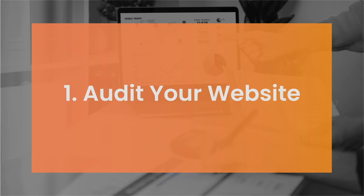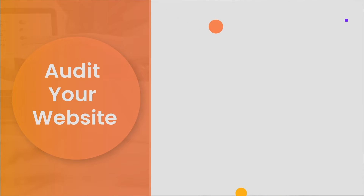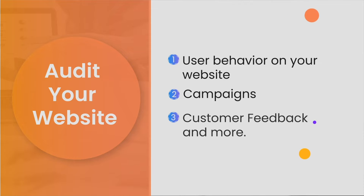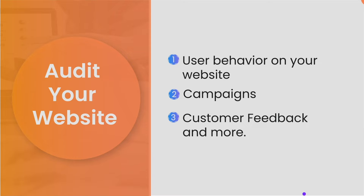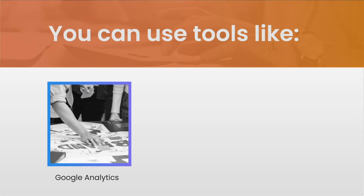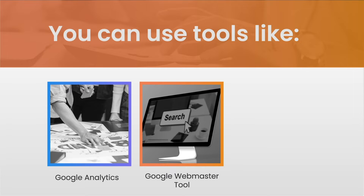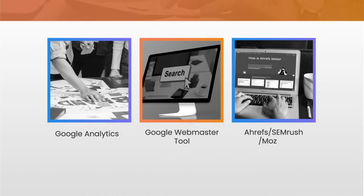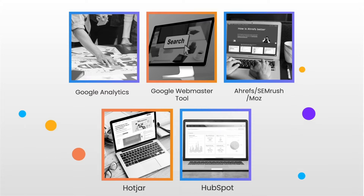Step 1: Audit your website. To begin, you need to audit your website. Here you can analyze user behavior on your website, campaigns, customer feedback, and more. This would give you the idea on the things to keep or remove from the migrated website. For website audit, you can use tools like Google Analytics, Google Webmaster Tool, Ahrefs, SEMrush, Moz, Hotjar, and HubSpot.